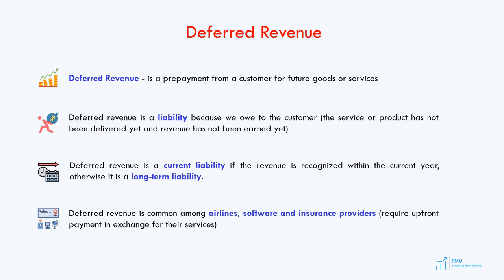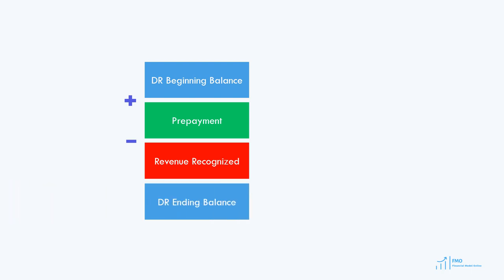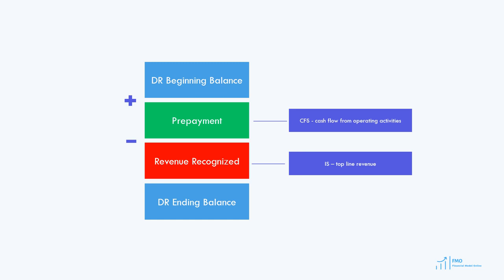So how do we account for the deferred revenue liability on the balance sheet? Since it is a balance sheet item, we always start with an opening balance. Next, we add the item that increases the deferred revenue balance, which is a prepayment from the customer. Since deferred revenue is revenue whose recognition has been delayed until we deliver the service or product, the revenue recognized related to the prepayment will decrease the deferred revenue balance. So the deferred revenue opening balance plus the prepayment from the customer less the revenue recognized gives us the deferred revenue balance at the end of the period. Note that the prepayment is a cash item and will be reflected in the cash flow from operations section of the cash flow statement. Revenue recognized is revenue that will appear on the income statement, and the deferred revenue balance at the end of the period will go to the balance sheet as a liability.